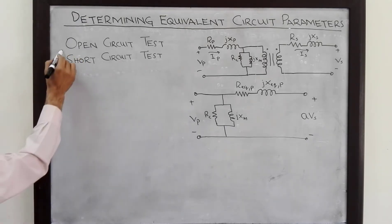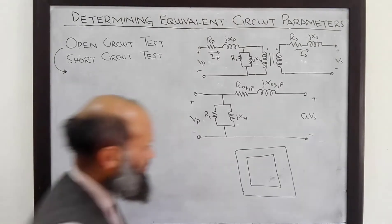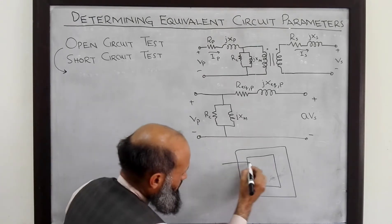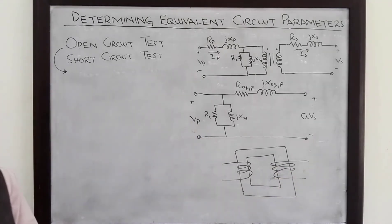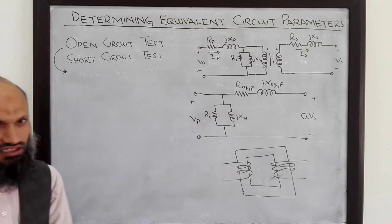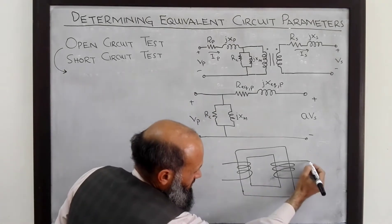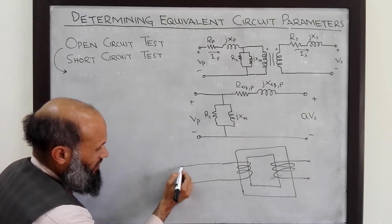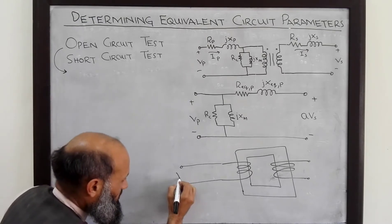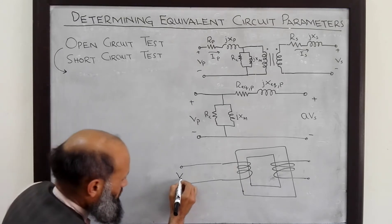Let's first talk about the open circuit test. In the open circuit test, we have a transformer with primary windings and secondary winding for which we want to determine the equivalent circuit parameters. What we do is open circuit the secondary winding and apply the rated voltage Vp(t) on the primary side.